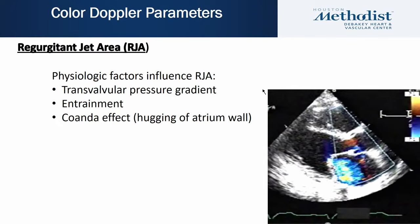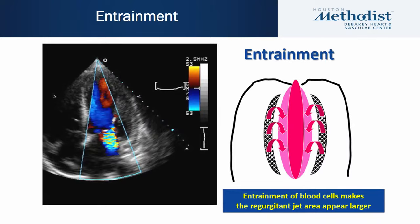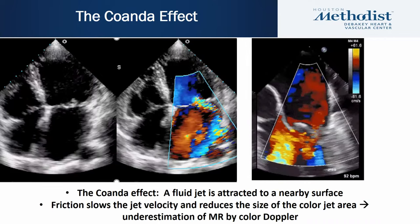Color Doppler parameters are helpful in assessing MR severity, though multiple factors can affect the regurgitant jet area. Factors affecting jet area include the transvalvular pressure gradient, entrainment, and the Coanda effect in jets that hug the atrial wall. Entrainment occurs when a high velocity jet entrains surrounding blood cells, making the jet appear larger. The Coanda effect is when an eccentric jet hugs the atrial wall — friction slows the jet velocity and reduces the color jet area, potentially causing underestimation of MR severity if color alone is used.